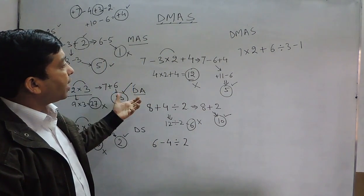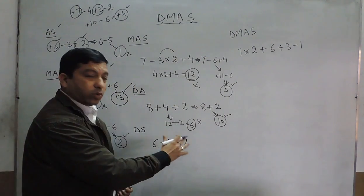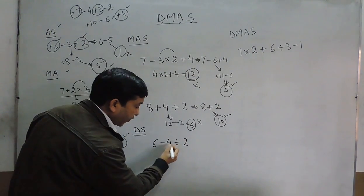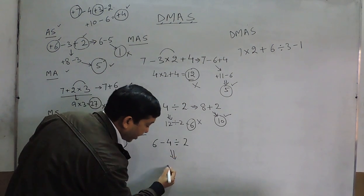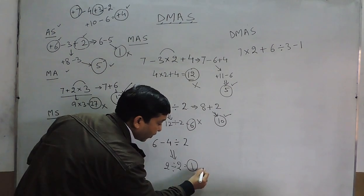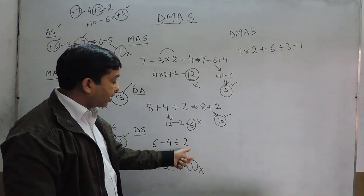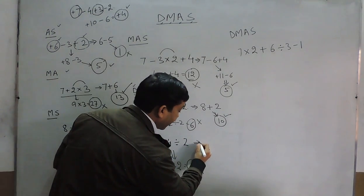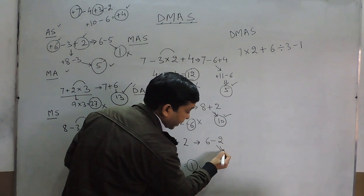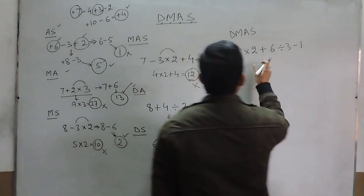Students commonly make mistakes here. For division and subtraction — for example 6 minus 4 divided by 2 — some do subtraction first: 6 minus 4 equals 2, then 2 divided by 2 equals 1. But this is wrong because subtraction was done before division. The correct way is 6 minus the result of 4 divided by 2, which is 2, giving the correct answer of 4.